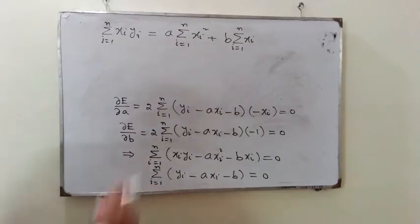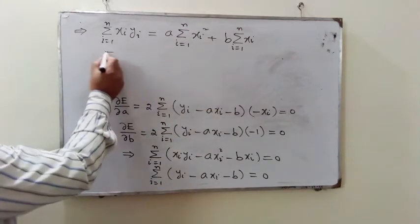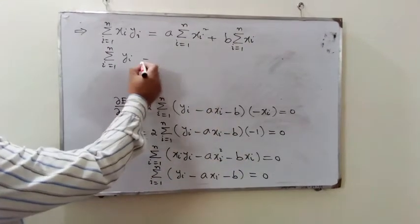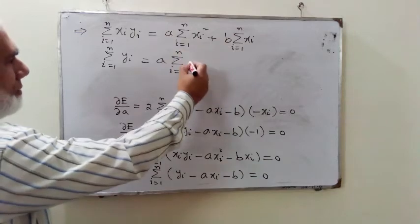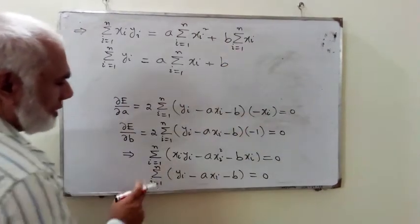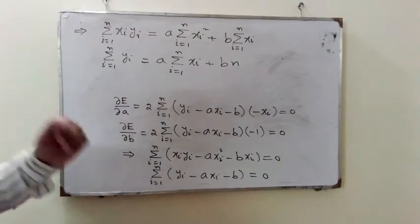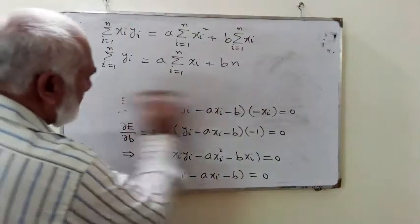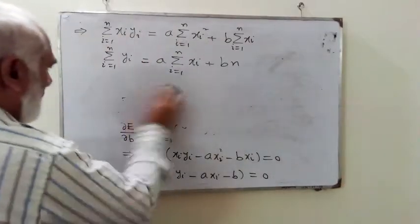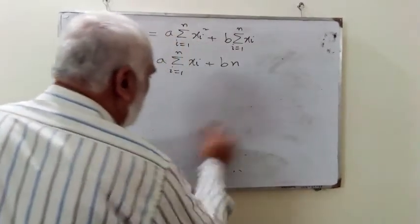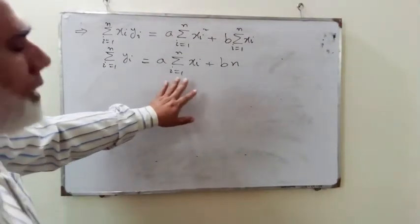This is the form of the first normal equation. From the second equation, keeping sigma(yi) on the left side and shifting terms to the right gives: sigma(yi) = a times sigma(i=1 to n) of xi plus b times n, since applying sigma to a constant gives the number of terms, which is n. We can now erase this to create space on the board.